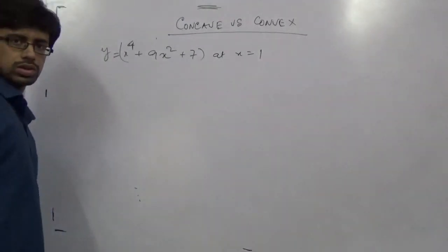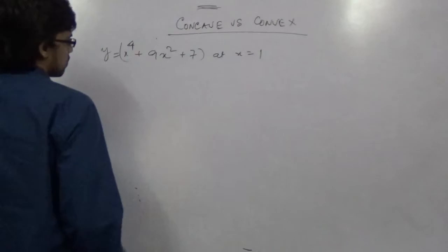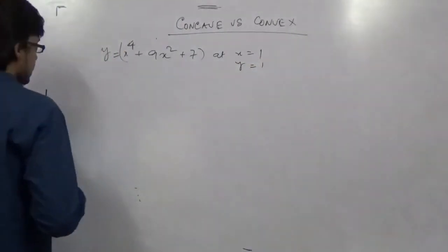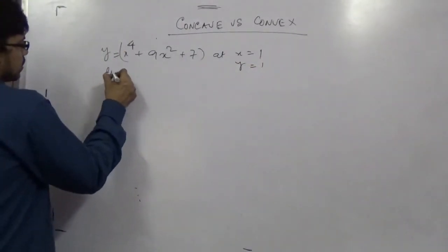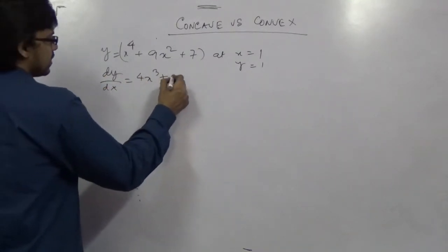What will happen to this curve whether it is concave or convex at this? Okay. At x equal to 1 comma y equal to 1. So first is dy dx. What is dy dx? That is 4x cubed plus 18x.